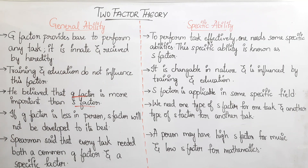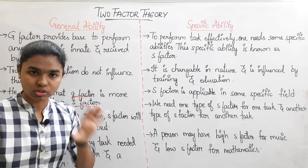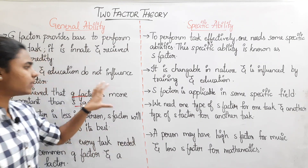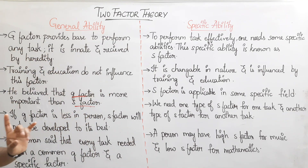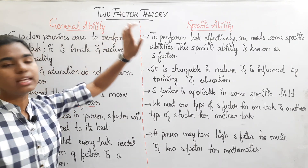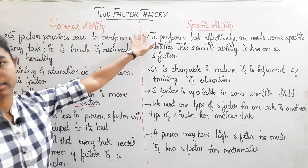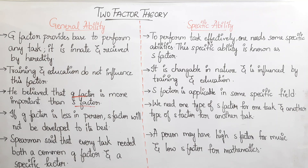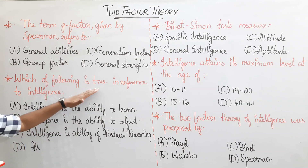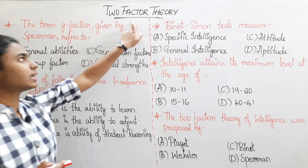This is the two-factor theory of Charles Edward Spearman. He proposed two types of intelligence: the G-factor and the S-factor. Now we will solve four or five practice questions on this topic.